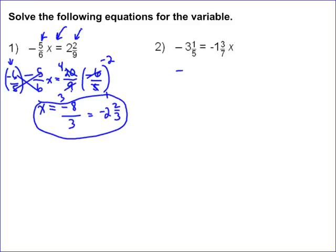For 2, again, I start the same way. I change them to improper fractions. 7 times 1 is 7, plus 3 is 10, so it becomes a negative 10 sevenths x.